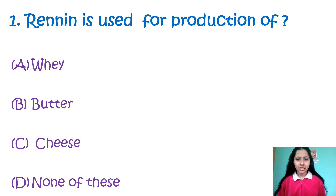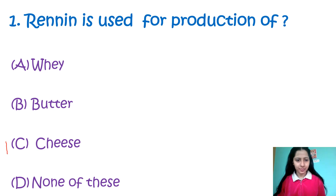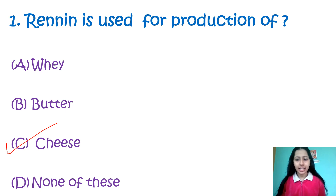Number 1: Rennin is used for production of — Option A: whey, B: butter, C: cheese, D: none of these. Rennin is used for the production of cheese. Actually, rennin is a protein-digesting enzyme which causes the milk protein to change into caseins, and this enzyme aids in the curdling of the milk. So the correct option is cheese.